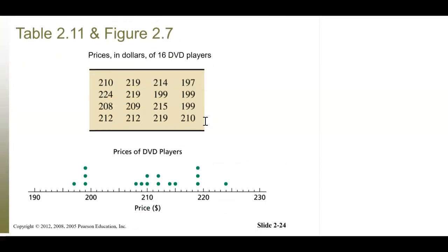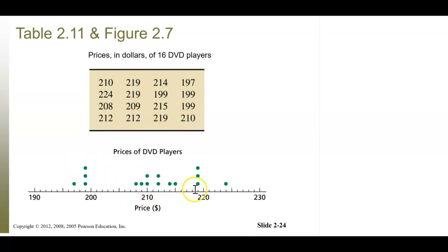Dot plots are great for single value grouping and give an excellent visual, but they really only work when you have some repetition in the data. For example, prices of 16 DVD players — we have multiple values at 219, a couple at 210, multiple at 199. A dot plot doesn't work well if there's no repetition, but they give a nice shape of the data, and the shape of data is something we're going to be discussing.